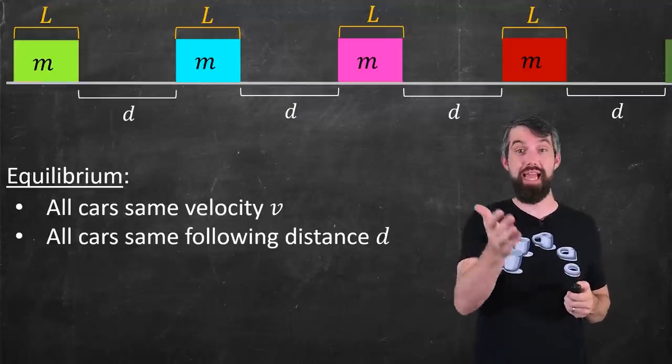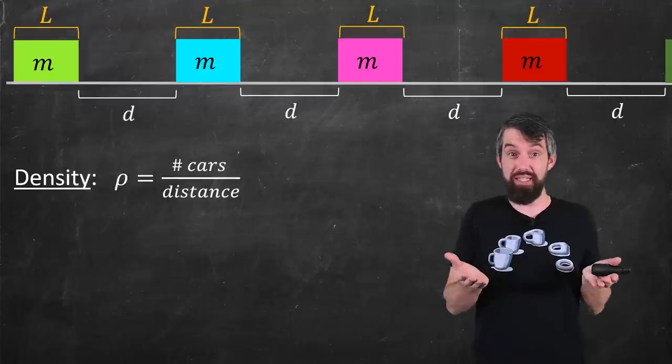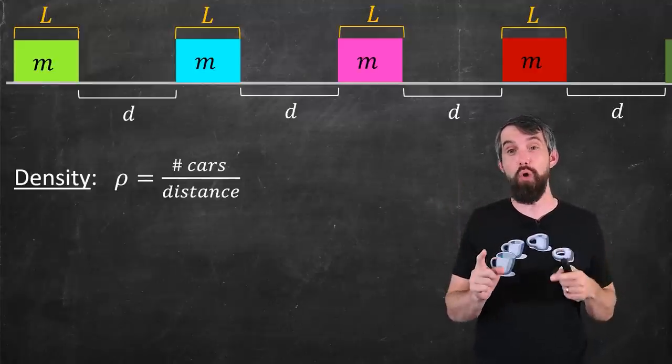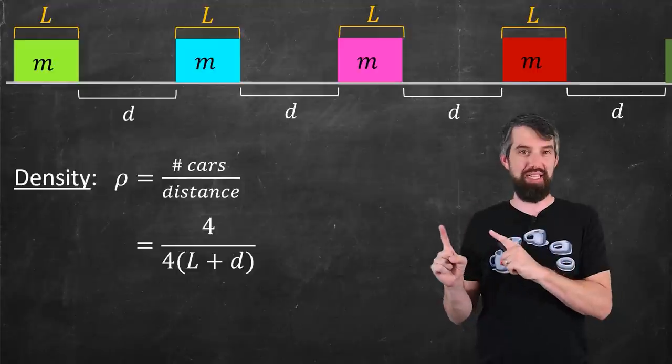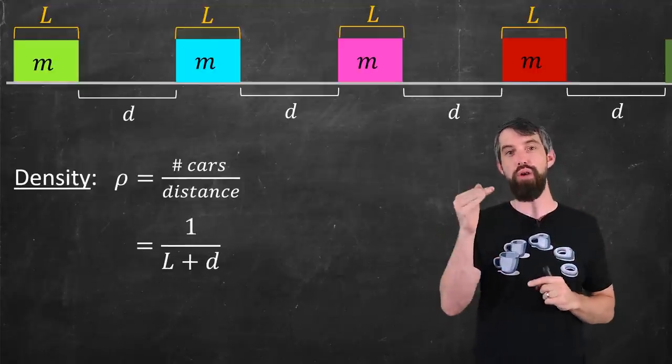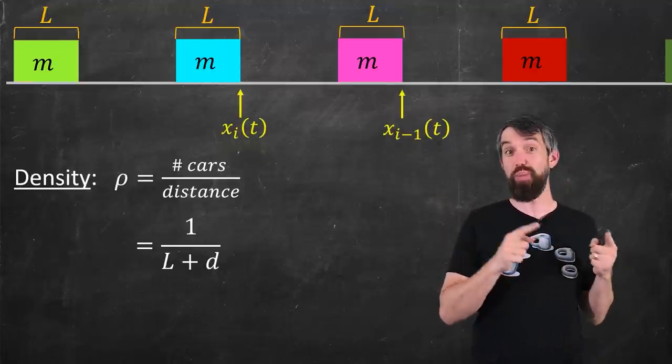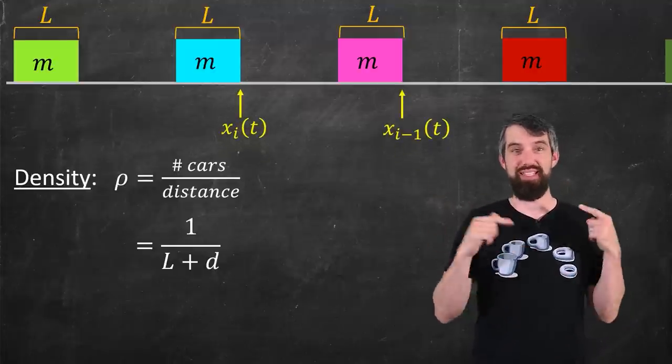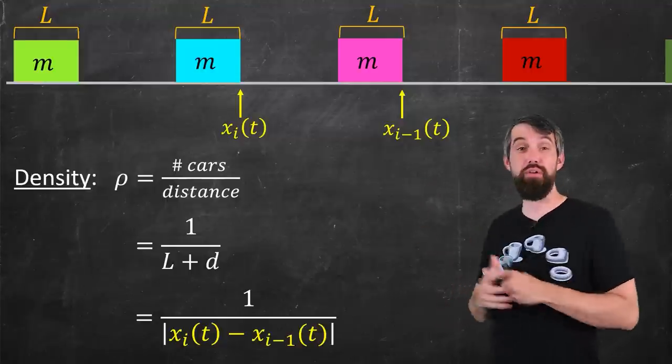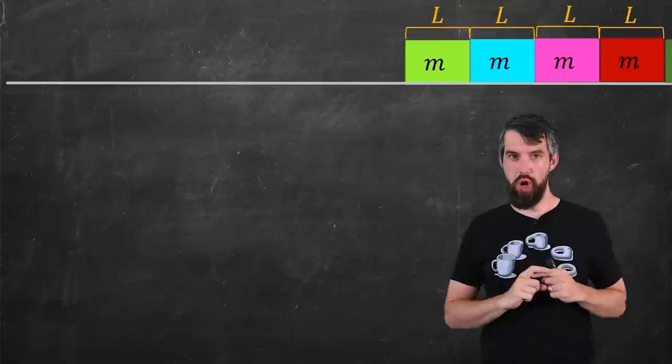Density is defined to be the number of cars in some unit distance. For example, in this scenario, I see four different cars, and this is over four times l plus d. The four cancel, and the density for this portion of road is one over l plus d. Or if I prefer using my x_i notation, I could notice that l plus d is just the same thing as the distance between x_i and x_{i-1}. And so the density is either of these two expressions, and we're actually going to use both as we go along in the video.